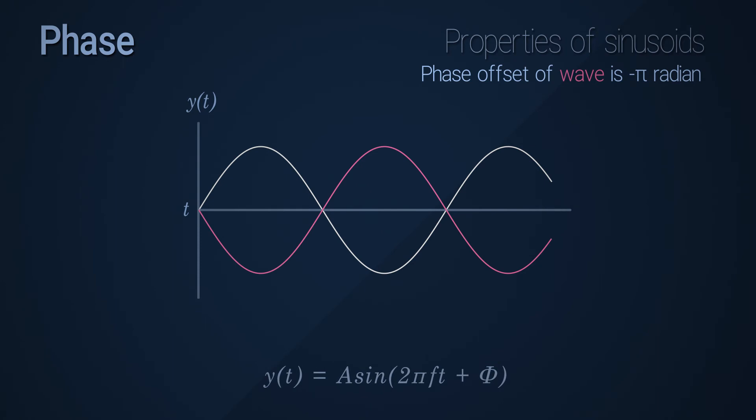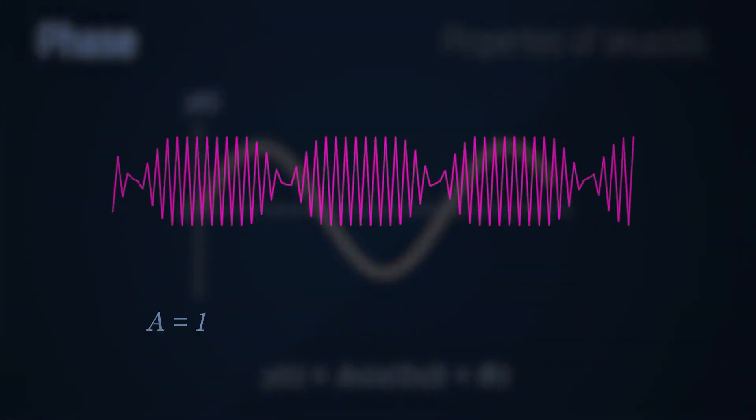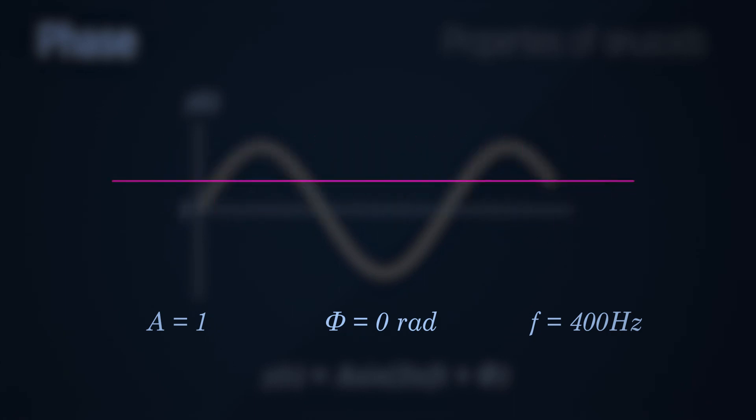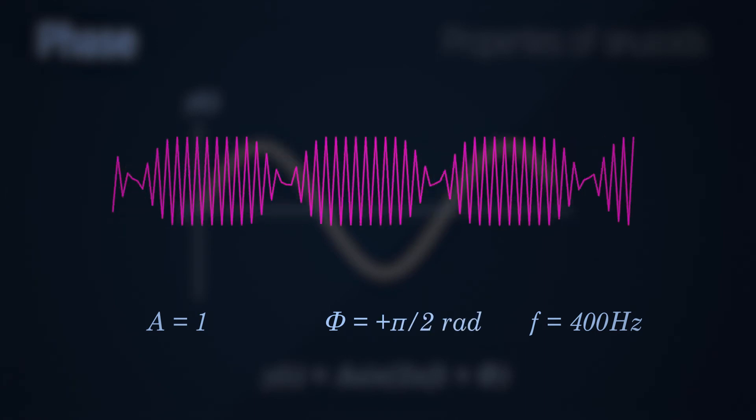The phase is represented by the Greek letter phi, and is measured in radians. Let's see what the real world effects are. Here's a sine wave with a frequency of 400Hz played back. Now, here's the exact same wave with a phase offset of positive pi over 2 radian.